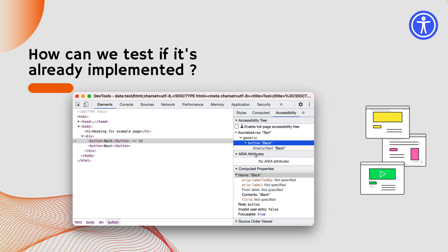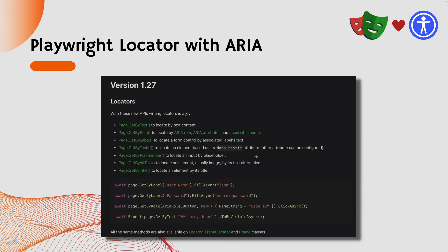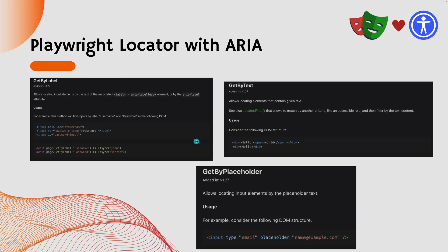If you work with Playwright, you may have already heard about ARIA component support like getByRole. This support was already added in Playwright version 1.27. In that version, they added support for ARIA roles, attributes, accessible names, and all the different roles. We can also dissect how getByText identifies components in the documentation. I've taken some screenshots to show how it looks.